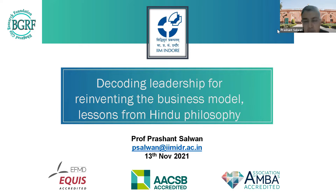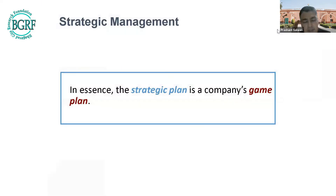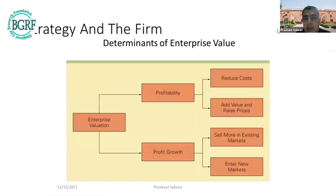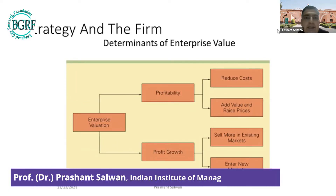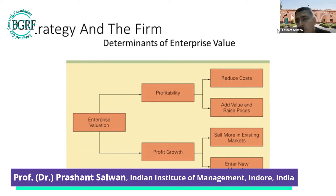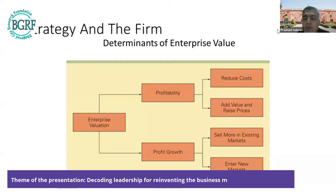Thanks a lot, pranam to every one of you. As a strategy professor, strategy is a game plan of a company, firm, or country. There are two reasons how a firm can make money — whether it's a startup or a big firm like Google or Apple — by doing two simple things: profitability and profit growth.